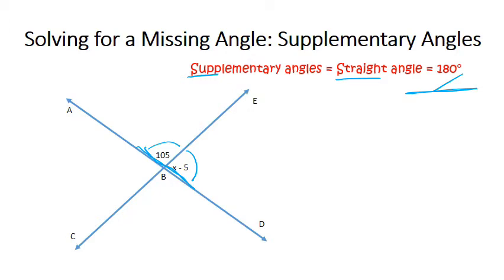So I'm going to start by setting up an equation. In this case, 105 plus x minus 5 would give me 180 degrees.